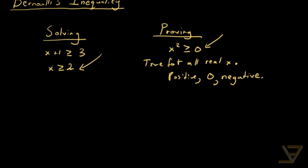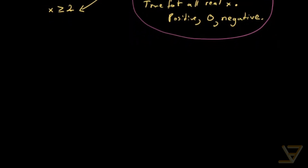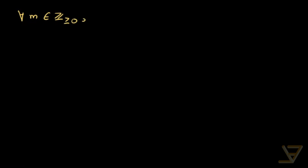I mention this because we're going to be focused on proving an inequality called Bernoulli's inequality, as opposed to solving something like a linear inequality. So let me state what Bernoulli's inequality says. It says that for all m in the non-negative integers, and for all real x greater than or equal to negative one, the following inequality holds: one plus x to the power of m is greater than or equal to one plus mx.